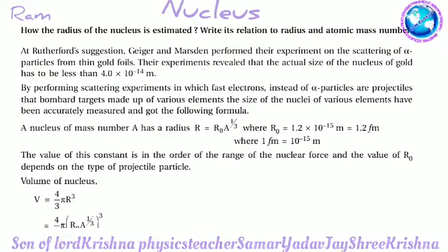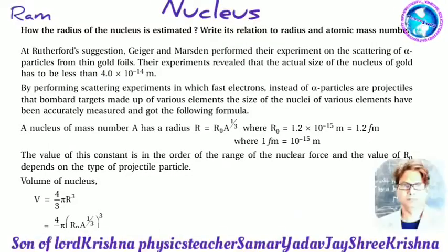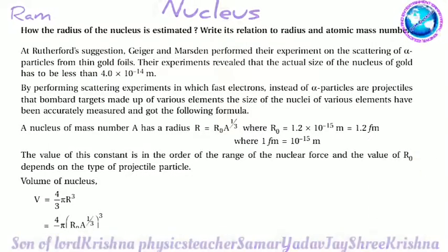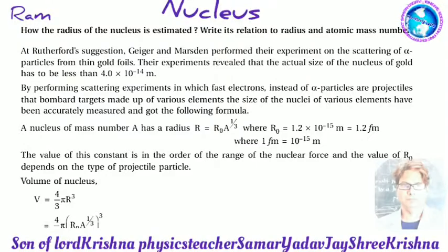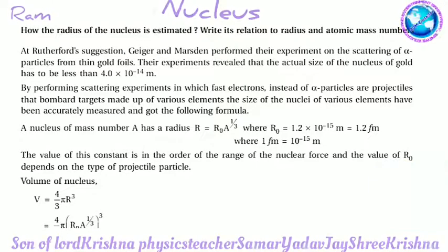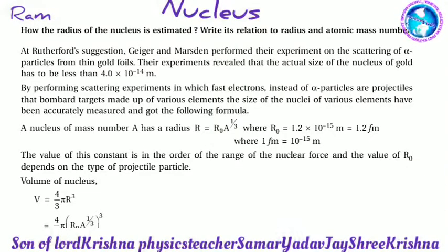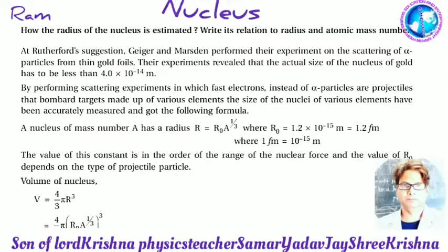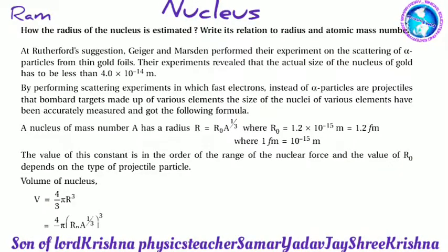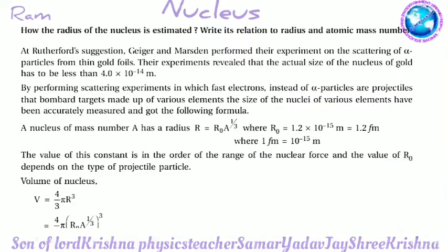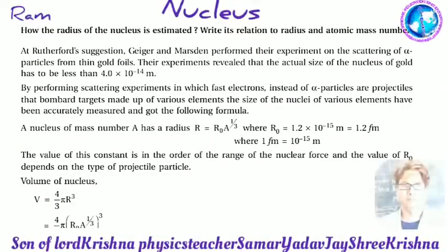A nucleus of mass number A has radius R = R₀ × A^(1/3), where R₀ = 1.2 × 10⁻¹⁵ m = 1.2 fermi.